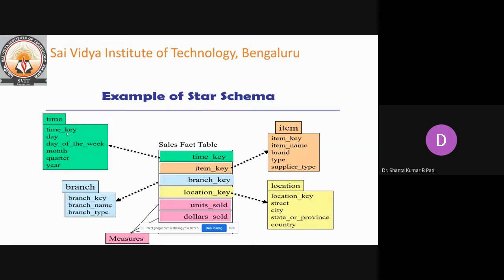The schema graph resembles a starburst with dimension tables displayed in a radial pattern around the central fact table. In the figure, there are four dimensions: time, item, branch, and location. The schema contains a central fact table for sales with foreign keys to each of the four dimensions, along with two measures — dollars sold and units sold. In the star schema, each dimension is represented by only one table containing a set of attributes.